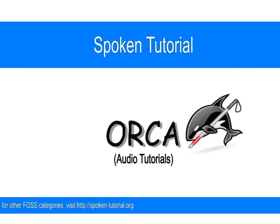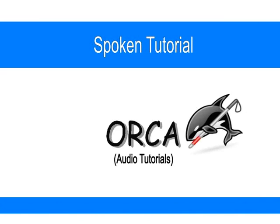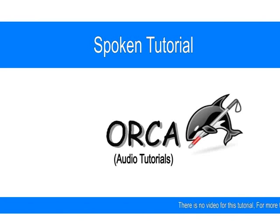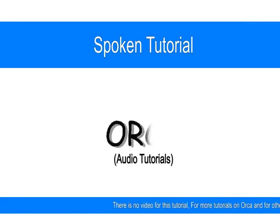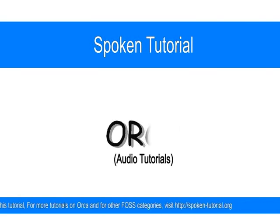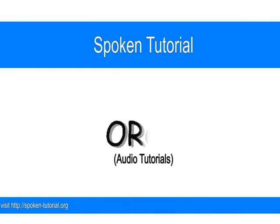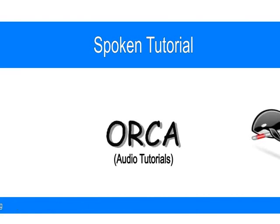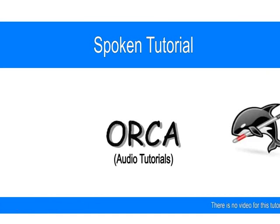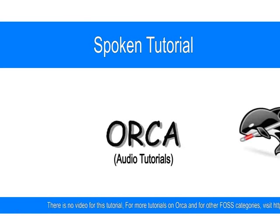Enable key echo — enter Y or N. Now Orca asks us if we want to hear every key as we press it. We will answer yes for this question. Enable alphanumeric and punctuation keys — enter Y or N. Now Orca is asking us if we want to have Orca echo every alphanumeric and punctuation key, which means every character including punctuation. So if we enter yes for this question we will exactly hear that. So let's press Y.